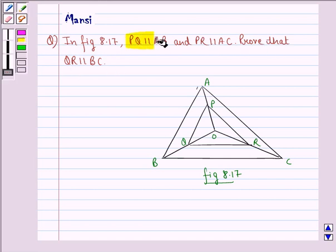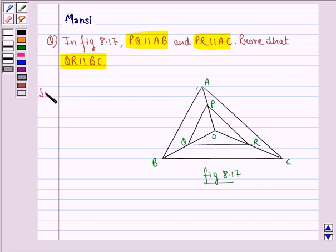So we are given PQ parallel to AB and PR parallel to AC, and we have to prove that QR is parallel to BC. So let us start with the solution to this question.